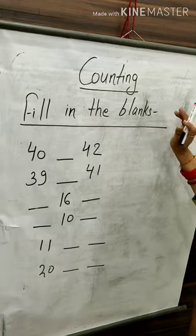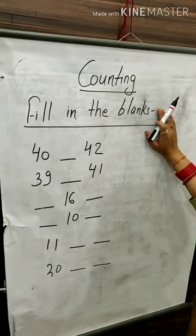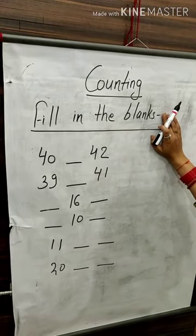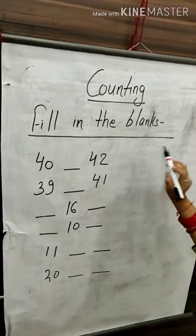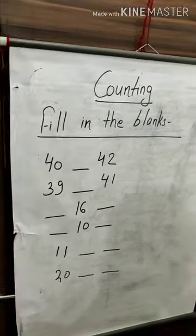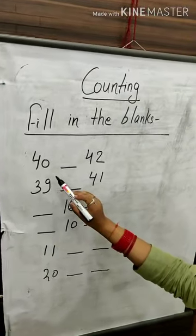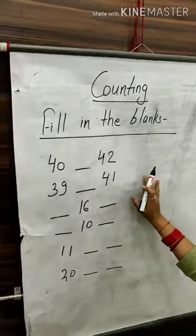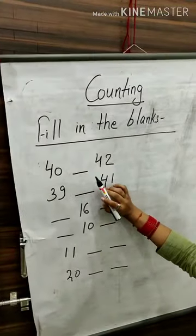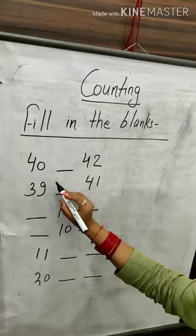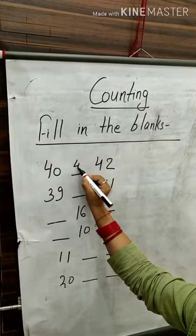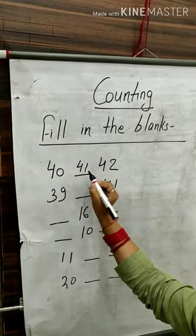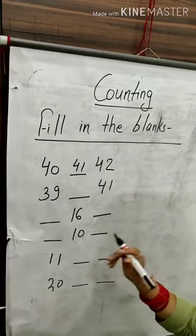My next topic is counting. Let's start fill in the blanks. Forty — gap — forty-two. Forty and forty-one and forty-two. Thirty-nine and forty-one.